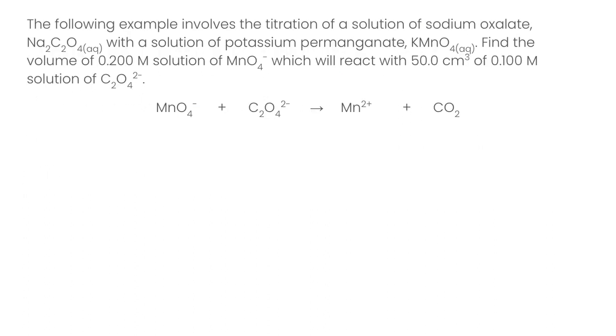Let's take a look at an example then. The following example involves the titration of a solution of sodium oxalate and a solution of potassium permanganate. We want to find the volume of 0.2 molar solution of MnO4- which will react with 50 cm³ of 0.1 molar solution of oxalate ions.